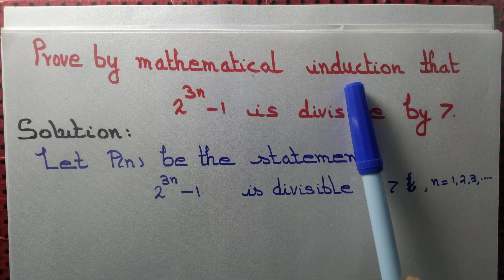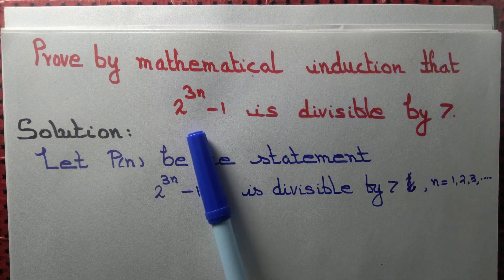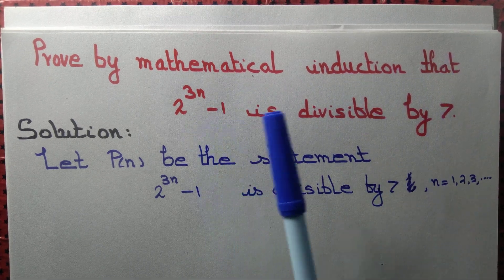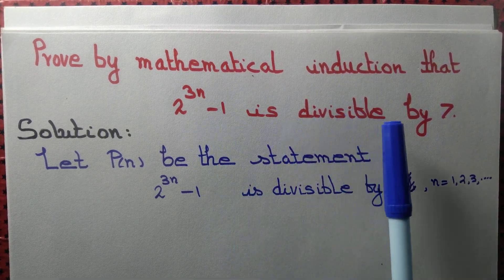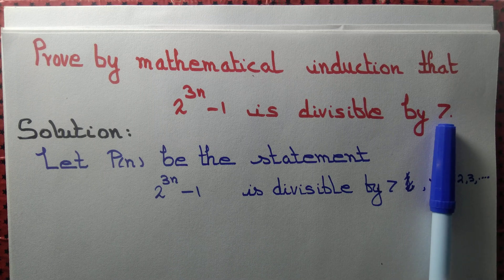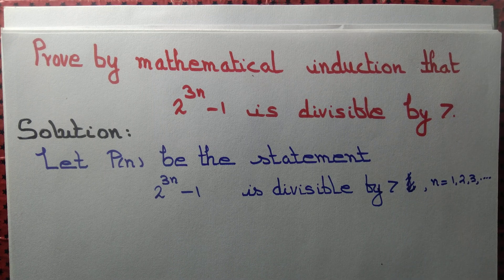Let us prove by mathematical induction that 2 to the power 3n minus 1 is divisible by 7 for n equal to 1, 2, 3, 4, 5, 6, and so on.